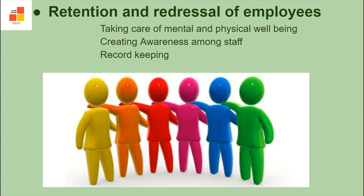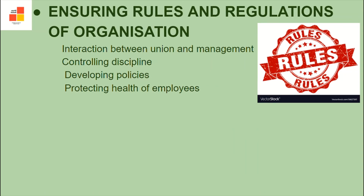Next, ensuring rules and regulations of an organization. How it can be done? By interacting between management and union, by controlling discipline, giving incentives for good behavior. Develop policies and handle sensitive issues like sexual harassment. By protecting the health of employees against hazards of the workplace.